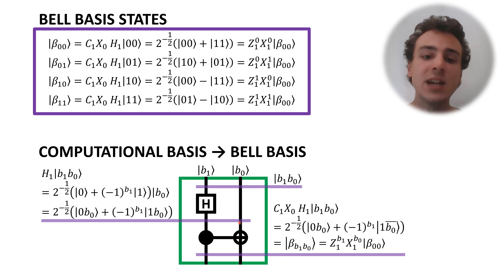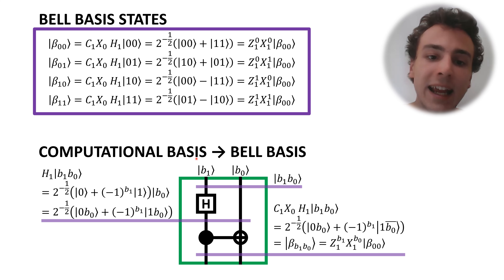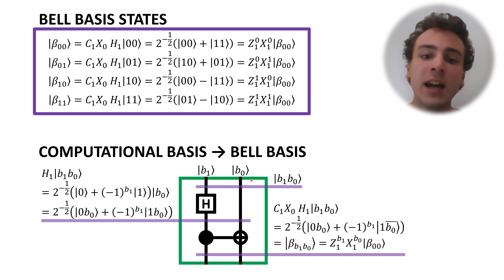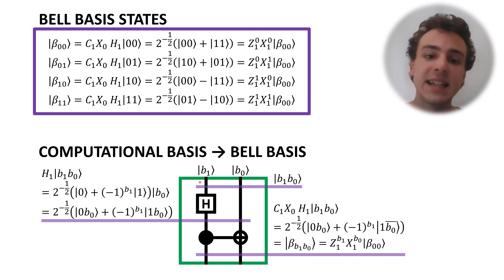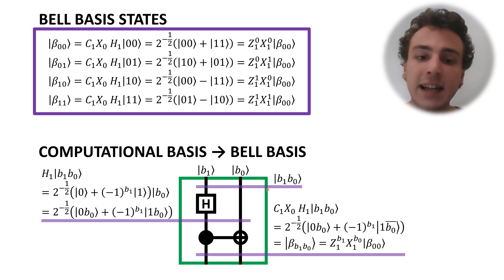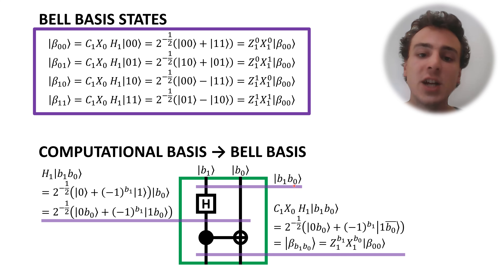Let's have a look at three stages in this procedure. Time flows from top to bottom, so the first stage is initialization. We are initializing qubit 1 in the single qubit computational basis state labeled by B1, and we are initializing qubit 0 in the single qubit computational basis state labeled by B0. Both B1 and B0 are bits; they can take on values of 0 or 1. This purple line is slicing through the quantum circuit diagram, giving us a snapshot just after initialization, where we have this two qubit computational basis state.